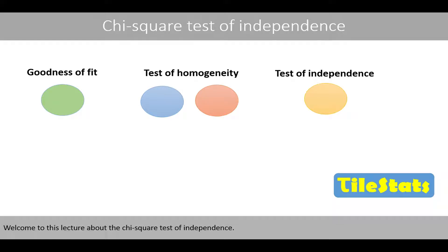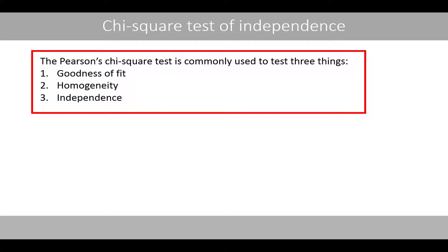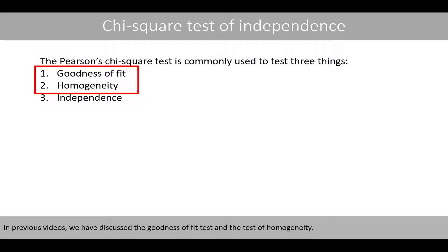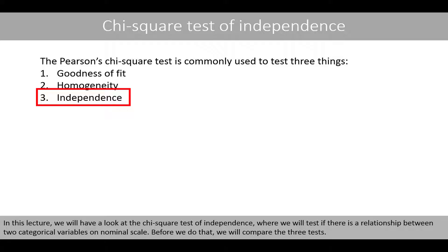Welcome to this lecture about the chi-square test of independence. The Pearson's chi-square test is commonly used to test three things: goodness of fit, homogeneity, and independence. In previous videos, we have discussed the goodness of fit test and the test of homogeneity. In this lecture, we have a look at the chi-square test of independence, where we test if there is a relationship between two categorical variables. Before we do that, we'll compare the three tests.